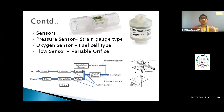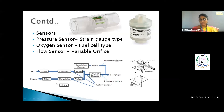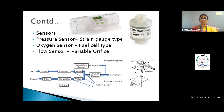Oxygen sensors are positioned just before the gas reaches the patient. A simplified sensor block shows: gas enters, passes through a filter, gets regulated, passes through a valve and an oxygen sensor, and then reaches the patient. A flow sensor — sometimes ultrasonic — is also present. One type is a variable orifice flow sensor, which uses a resistive circuit to measure flow.